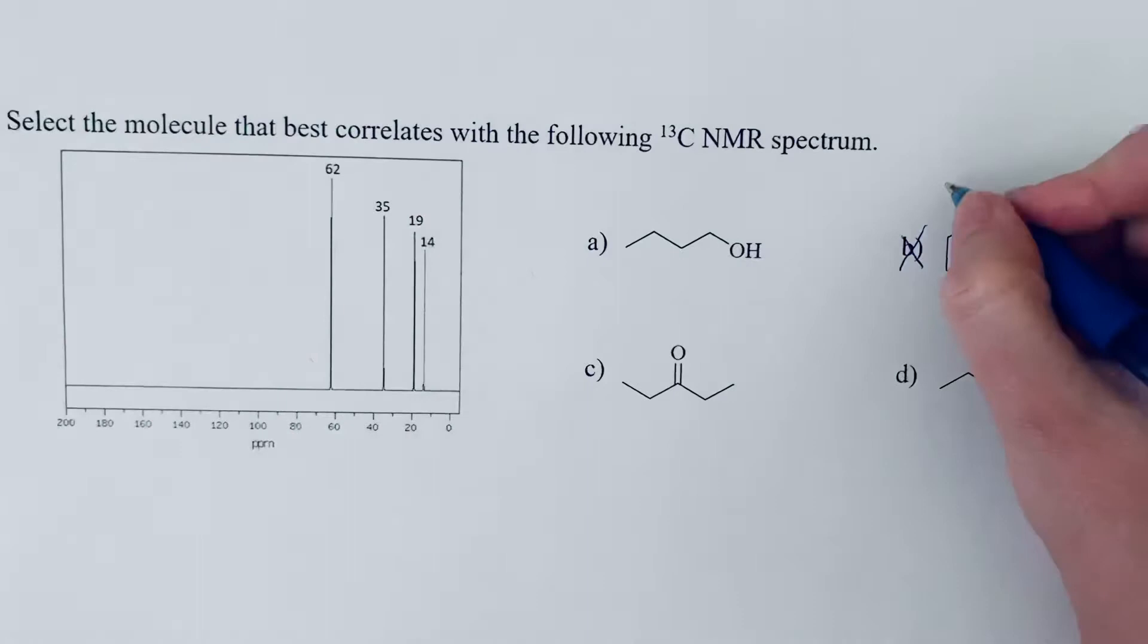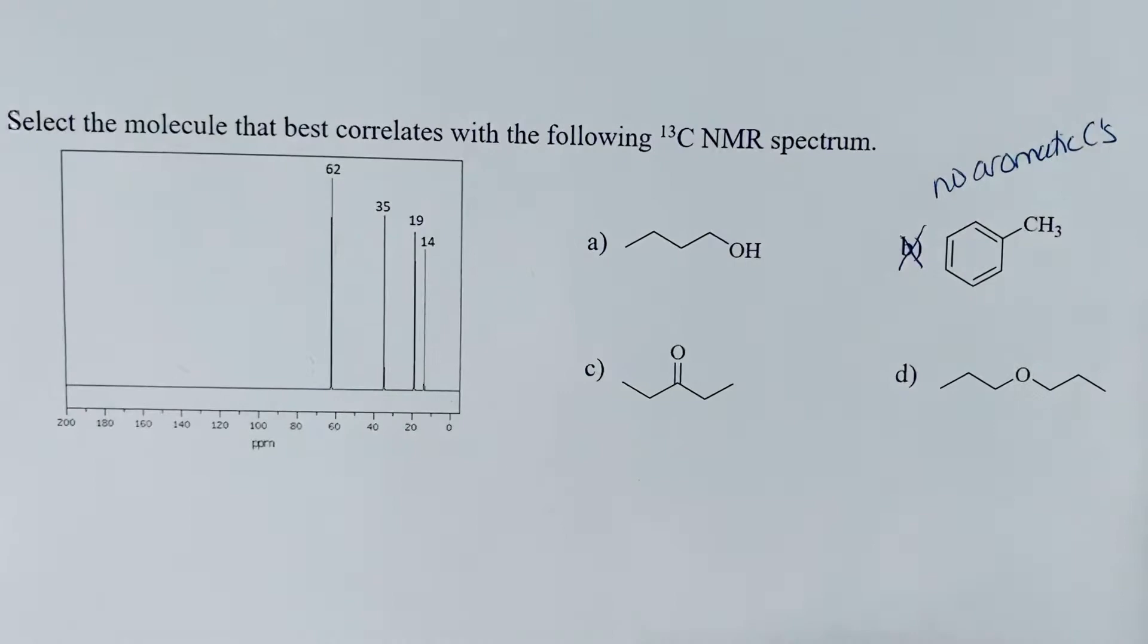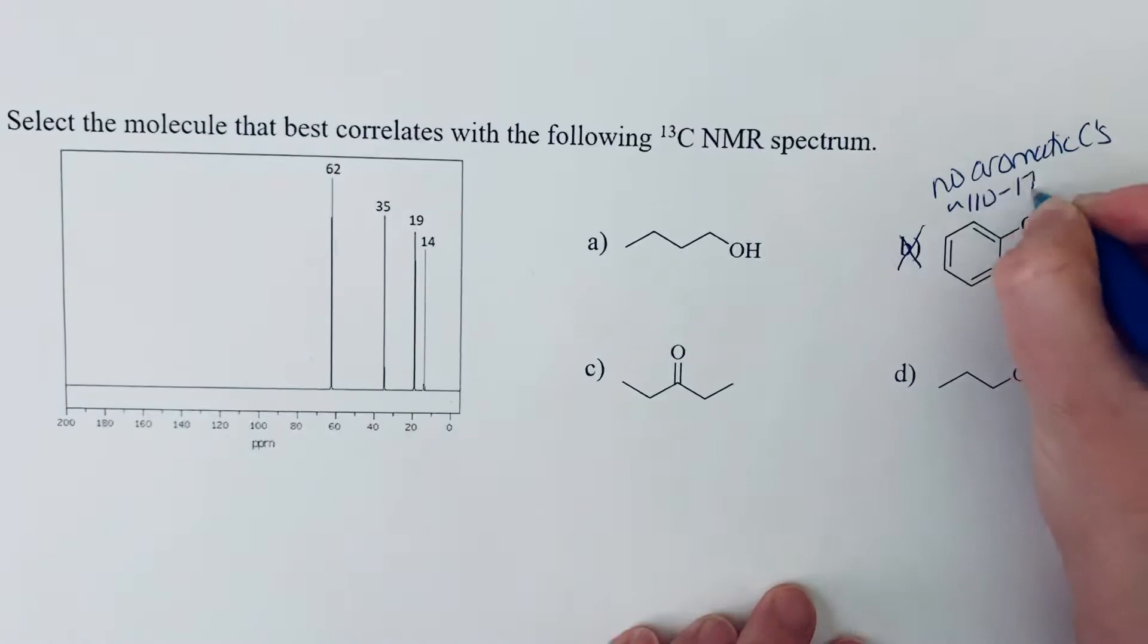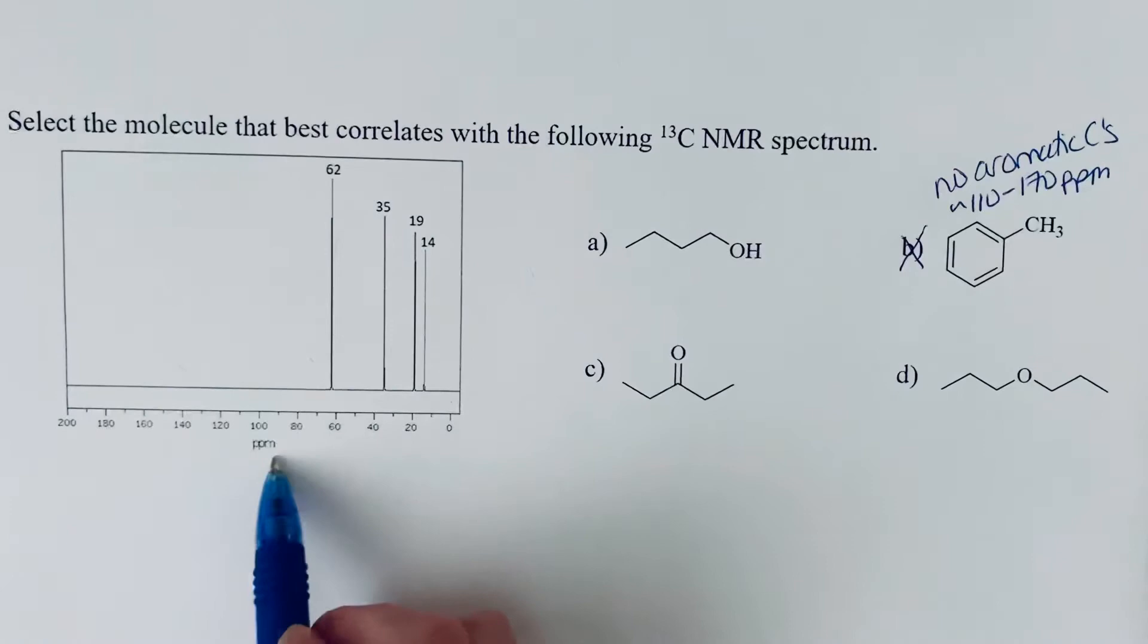So I would cross that out because I don't see any aromatic carbons. And if you're looking at the table in your book, that'll tell you that they show up around in the range of 110 to 170 ppm. So ppm is always that scale, parts per million, that scale on the bottom.